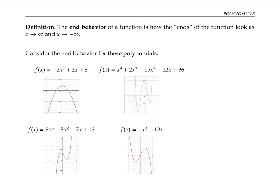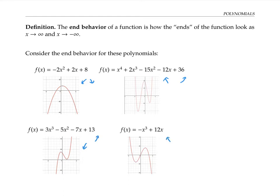The end behavior of a function is how the ends of the function look as x gets bigger and bigger toward infinity, or as x goes through larger and larger negative numbers toward negative infinity. In the first example, the graph falls as x goes toward both infinity and negative infinity — I can show this with two arrows pointing down on either side, or say the function is falling left and falling right. In the second example, the graph rises to the left and rises to the right. In the third, it falls to the left but rises to the right. And in the fourth, it rises to the left and falls to the right.